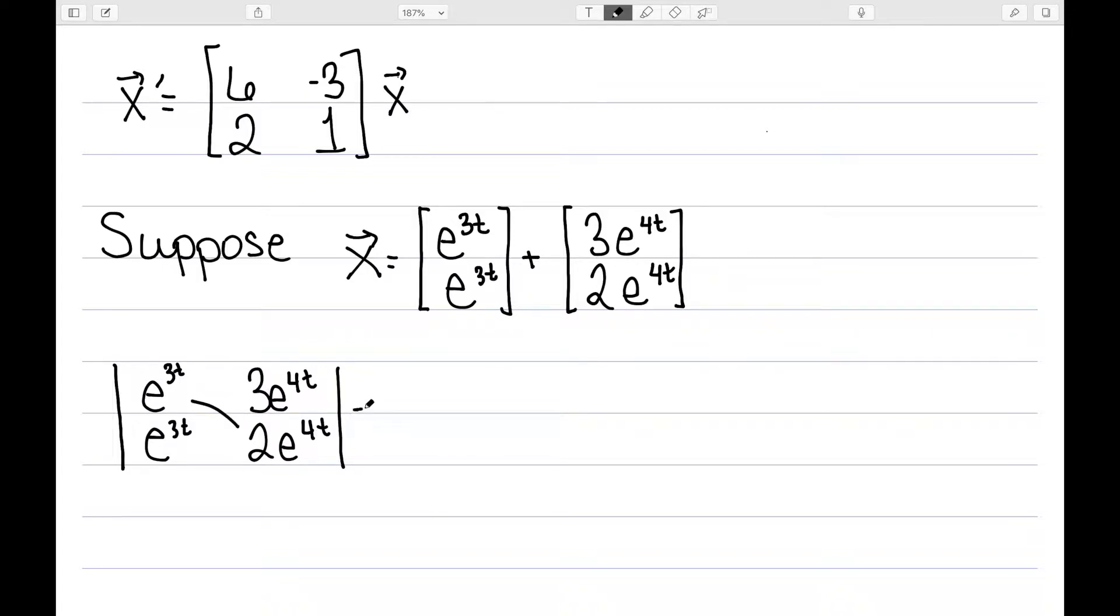Multiplying this way, I have 2e^(7t) minus, multiplying this way, gives me 3e^(7t), which is negative e^(7t). There are values of t that make this non-zero, so these are linearly independent.